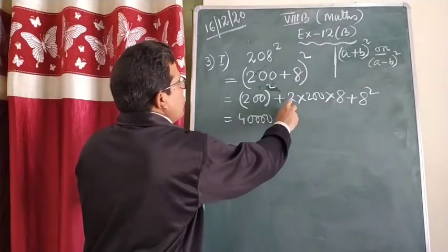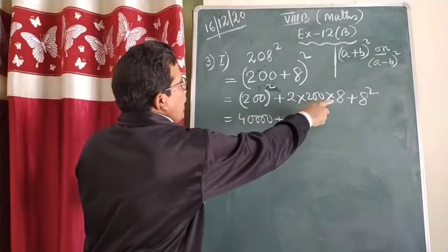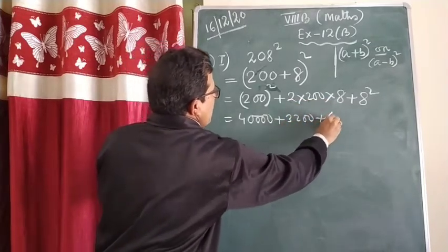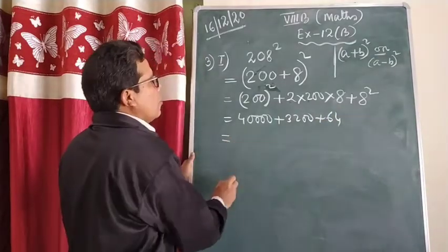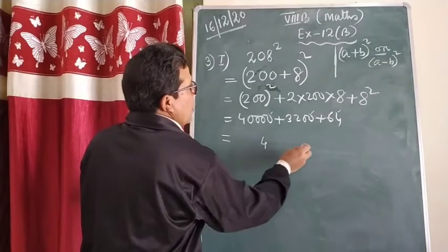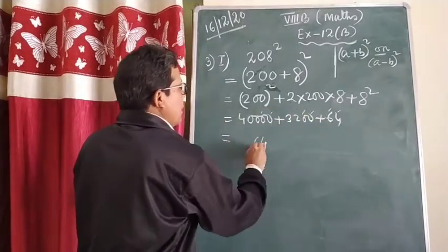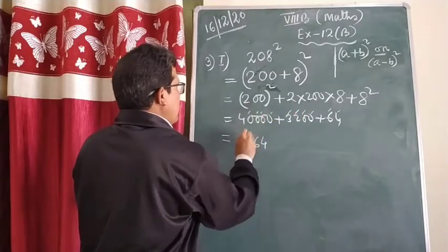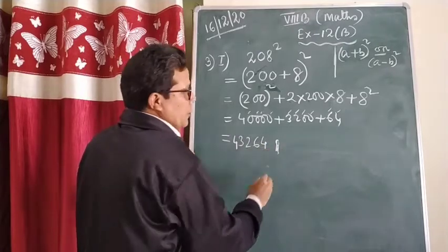It's very easy: 2×2 is 4, 4×8 is 32, giving 3,200. Plus 8 squared equals 64. Now adding them all: the unit place gives 4, the tenth place gives 6, the hundredth place gives 2, then 3 and 4 — so the answer is 43,264.